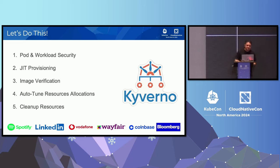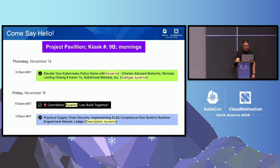To quickly recap, five different policy types: pod security capabilities, just-in-time provisioning, image verification, auto-tuning of resource allocations, and cleaning up or deleting resources in your clusters. We'll be at the project pavilion, so come say hello. There are plenty of other sessions also featuring Kyverno. Hope to see you during the conference. Thanks, everyone.